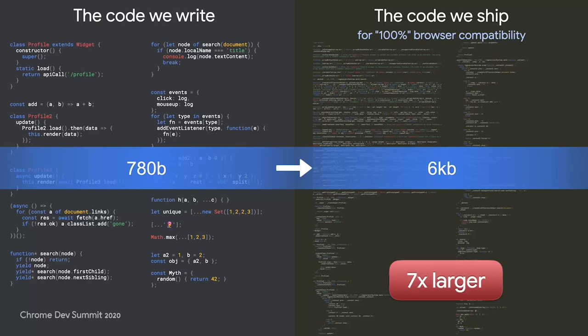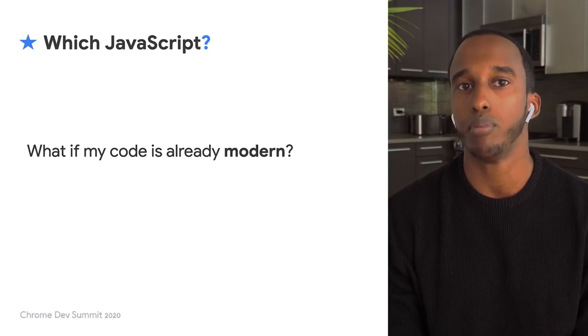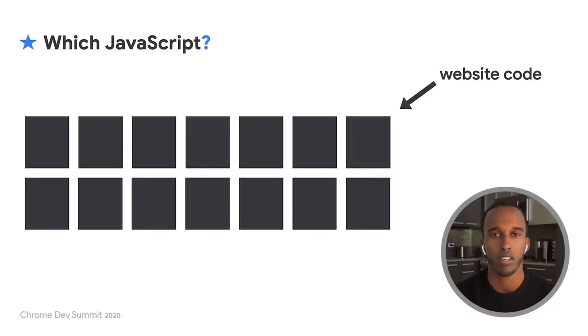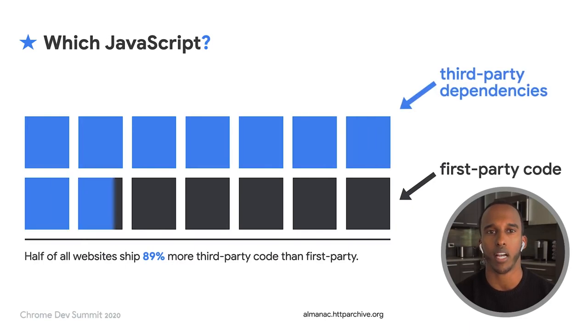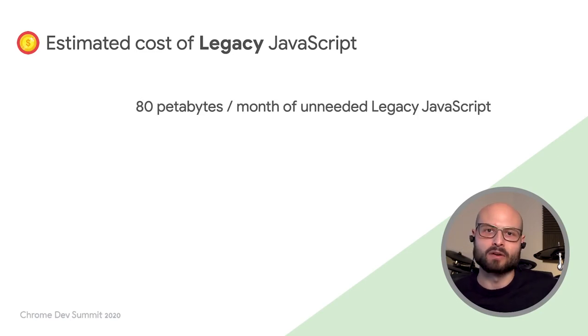We know that the code on the left works in 95% of browsers, and a lot of us are already writing modern code like this. But if we take a step back and look at what makes up our website code, we'll find that the majority of our codebase comes from third-party dependencies. Data from HTTP Archive shows that half of all websites ship almost 90% more third-party code than first-party. Working back from global web traffic, we can estimate that the overhead of shipping legacy JavaScript accounts for around 80 petabytes per month of internet bandwidth.